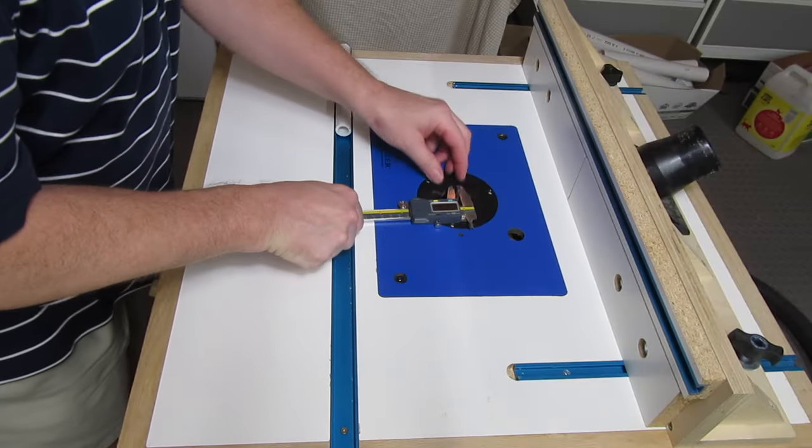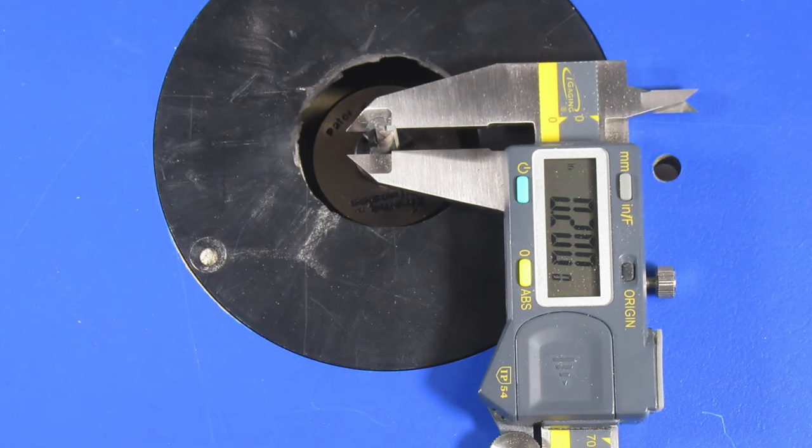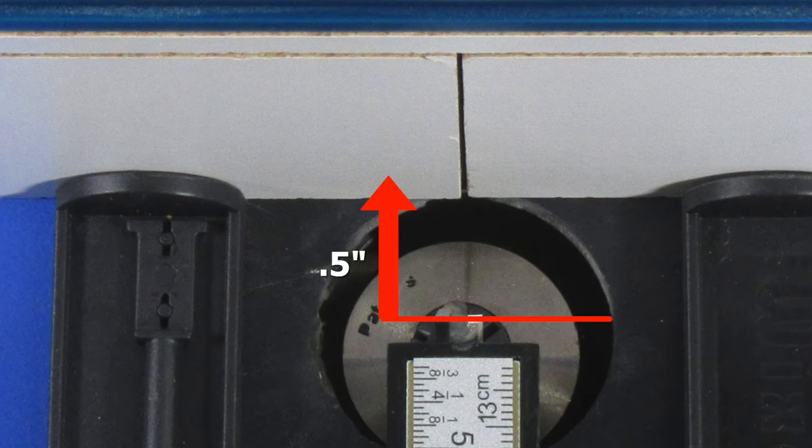I position the bit with the blades pointing to the sides, then I measure the diameter of the bit, and it's two-tenths of an inch. So that means I need to set the gauge to half an inch plus a tenth of an inch for half the diameter of the bit, and that comes out to six-tenths of an inch.